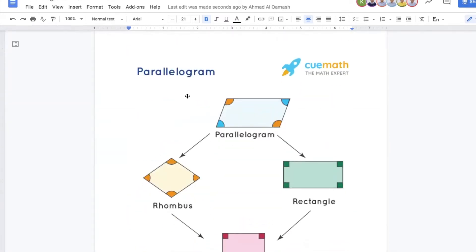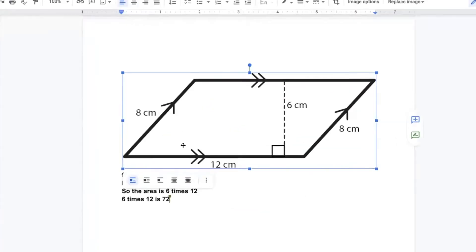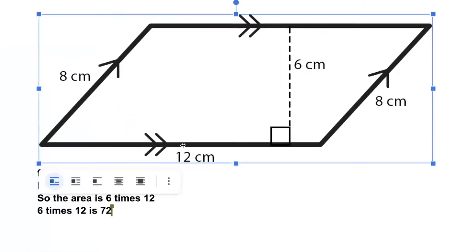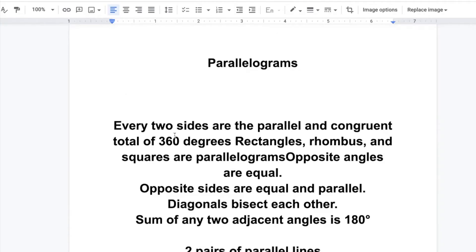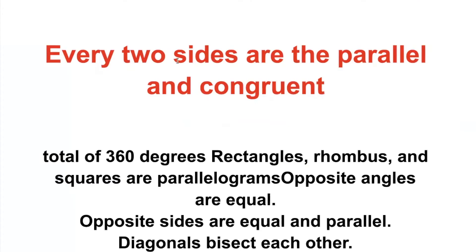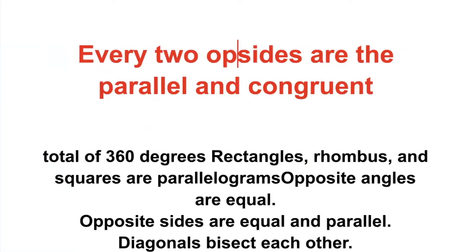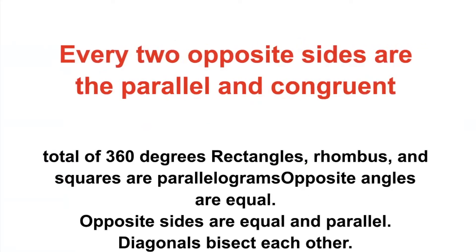Someone posted a photo — let's look at it. What do we call the number 12 here? Base — very great. And the number six? Height. The number eight? Adjacent side. What is the area? Somebody said every two sides are parallel and congruent — that's absolutely correct. Can we change it to 'every two opposite sides are parallel and congruent'? It must be opposite.